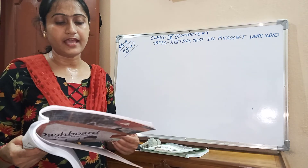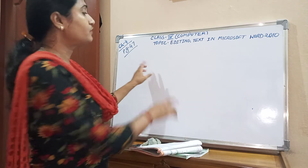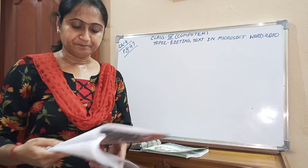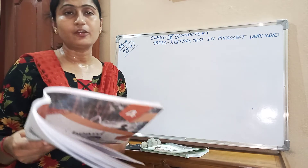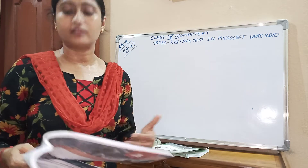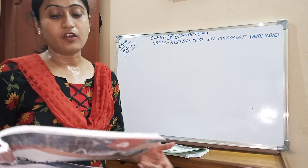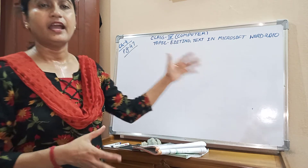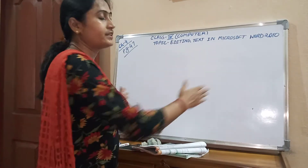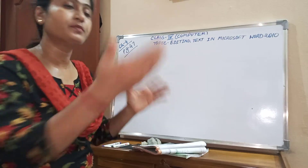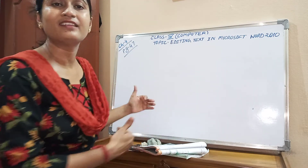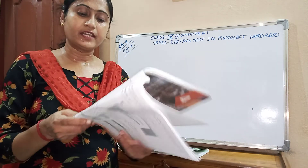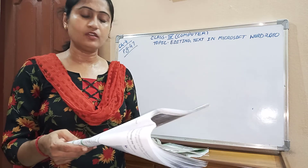The cursor moves to the right as you type. When you come to the end of a line and Enter is not pressed, the content that cannot fit in one line will automatically move to the next line. This is called word wrapping. You just keep typing and automatically your cursor will come to the next line.